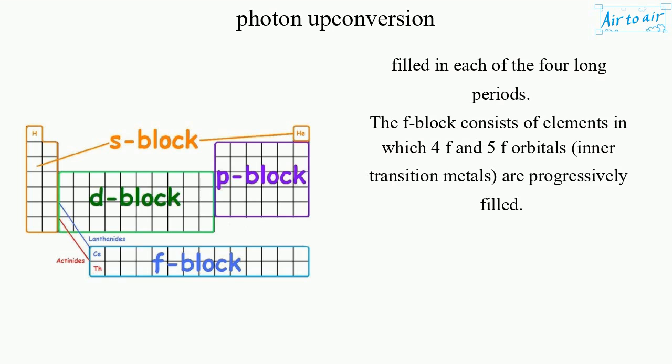The F-block consists of elements in which the 4F and 5F orbitals, the inner transition metals, are progressively filled.